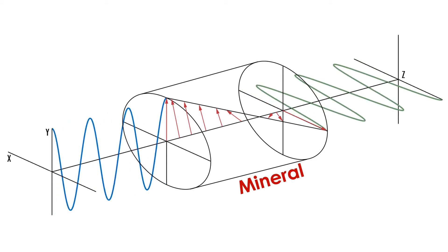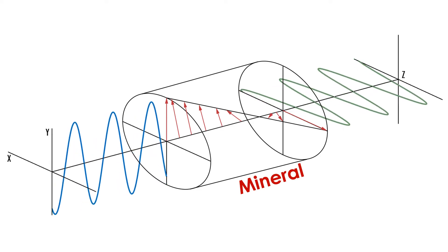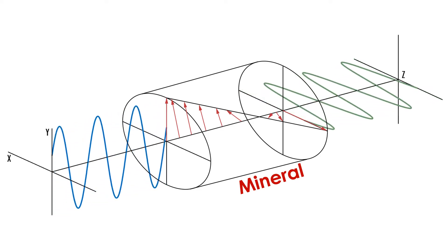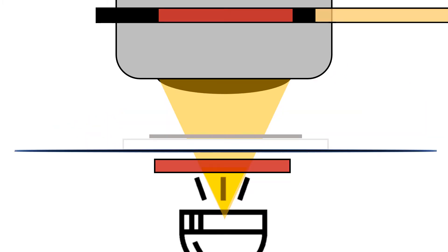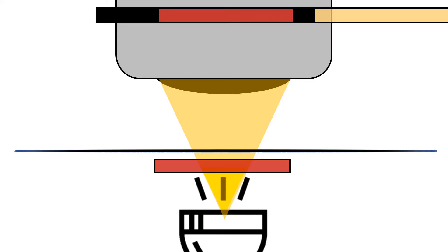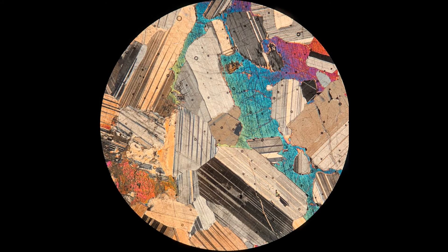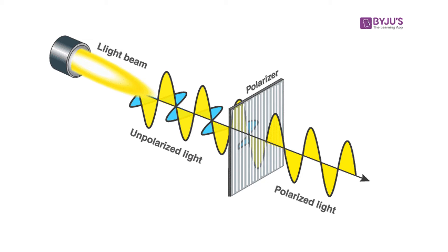Light only passes through both filters if there is refraction of the waves as they pass through a mineral. If there is no refraction, or if there is no thin section between the filters at all, no light gets through and the view appears black. However, minerals refract light, so if minerals are present between the two filters, the light will be refracted and the minerals will be visible under the scope.